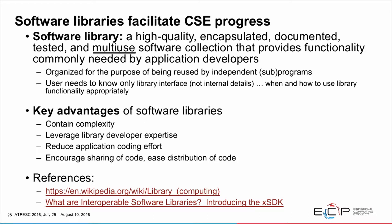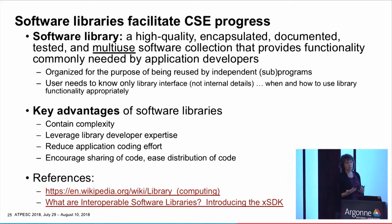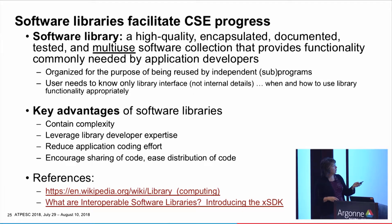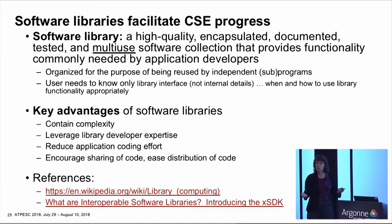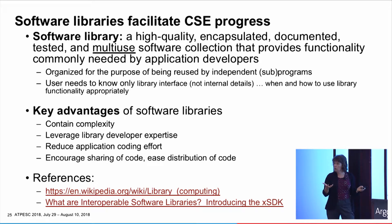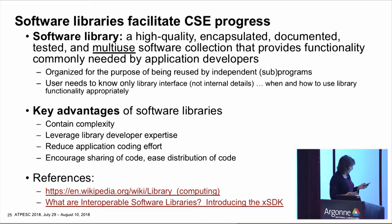Software libraries are what we're going to focus on today. According to Wikipedia, a software library is a high-quality, encapsulated, documented, tested, and multi-use software collection that provides functionality commonly needed by application developers — organized for the purpose of being used and reused in lots of different application settings. It encapsulates all of that complexity, so that applications only need to understand the appropriate interfaces for interacting with that library — what's the API, the right ways to use the library.